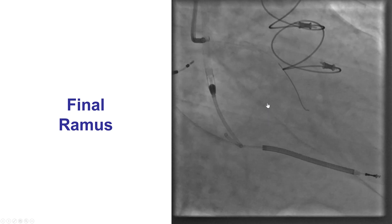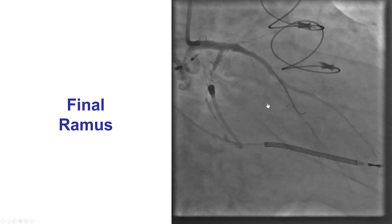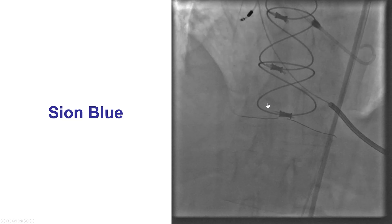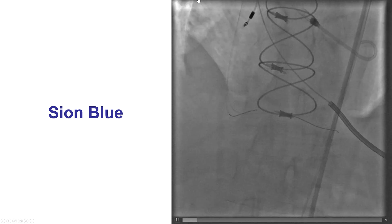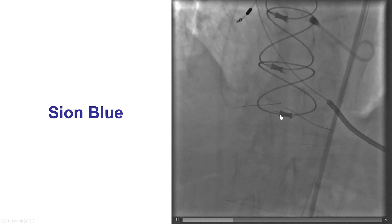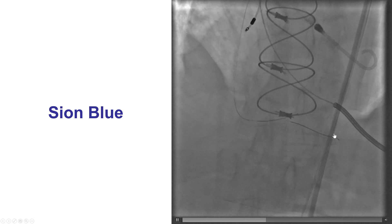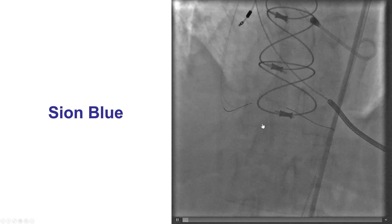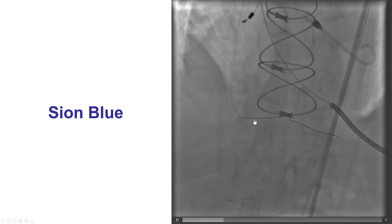The patient remained stable during this part of the procedure without any chest discomfort or hemodynamic compromise. We then changed to the right coronary artery, engaging the SVG with a multipurpose guide. We inserted a workhorse wire in the posterolateral branch, but had a lot of difficulty getting into the posterior descending artery, which had a tight ostial lesion.